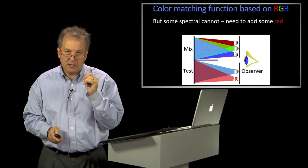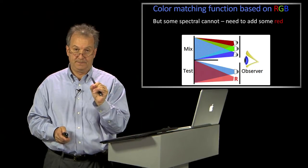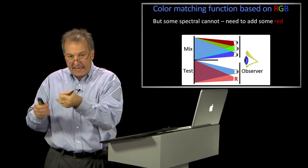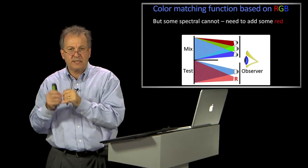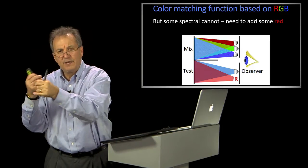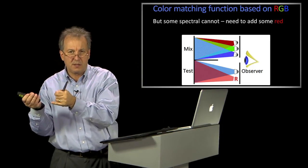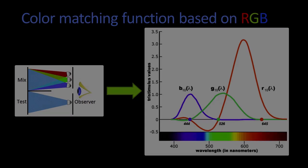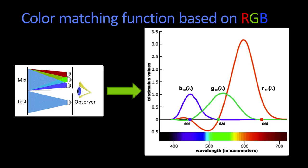Certain wavelengths in the spectrum, you would look at it and for those particular three lights they gave you, there was no blending of them at all that would equal this color. And the way that gets expressed is the following.